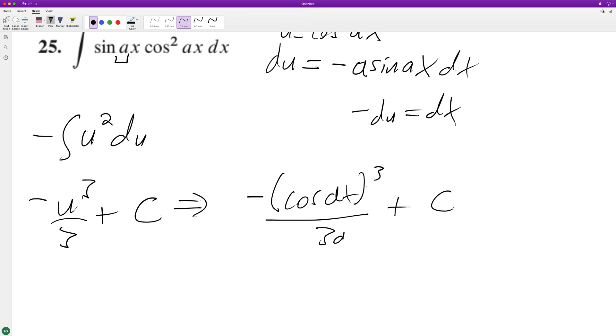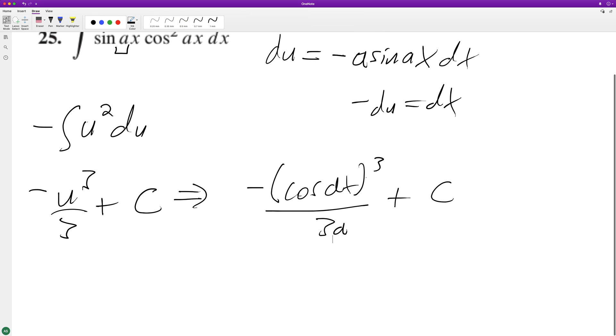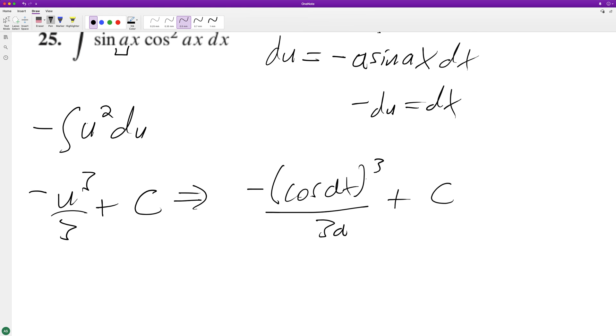Actually, this should be three a in the denominator. This is correct, but I can rewrite this as negative cosine cubed ax over three a, or cosine cubed ax over three a plus C.